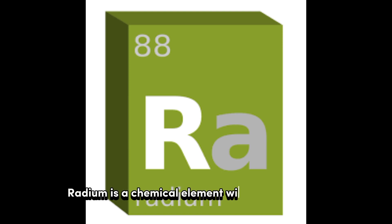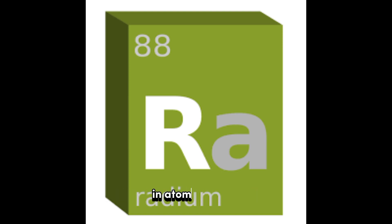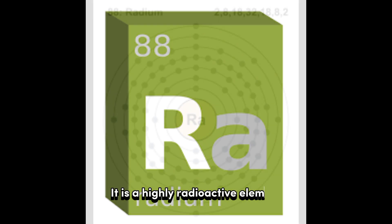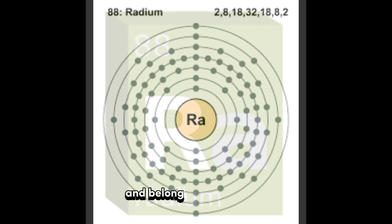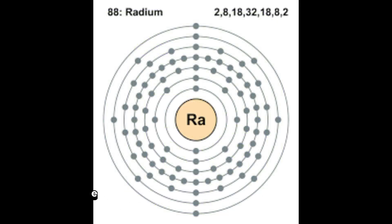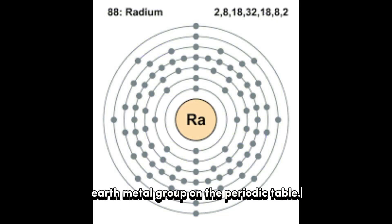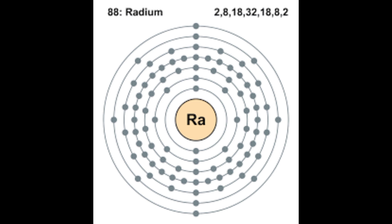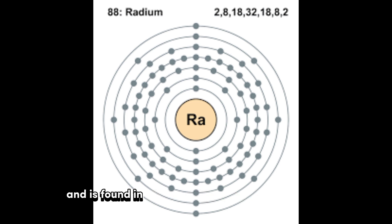Radium is a chemical element with the symbol Ra and atomic number 88. It is a highly radioactive element and belongs to the alkaline earth metal group on the periodic table. Radium is a rare element and is found in trace amounts in the earth's crust.